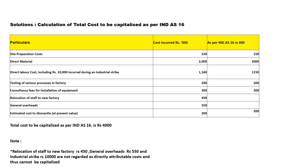We have estimated cost to dismantle at present value, which is 200. This is related, so we are going to include this 200. You take all the particulars which are applicable as per Indian Accounting Standard 16, add them all up, and you will get your answer. Total cost to be capitalized as per Indian Accounting Standard 16 is Rs. 4,000.